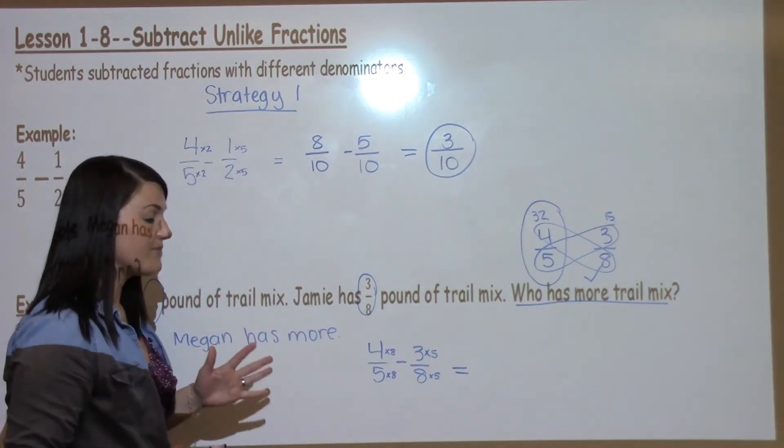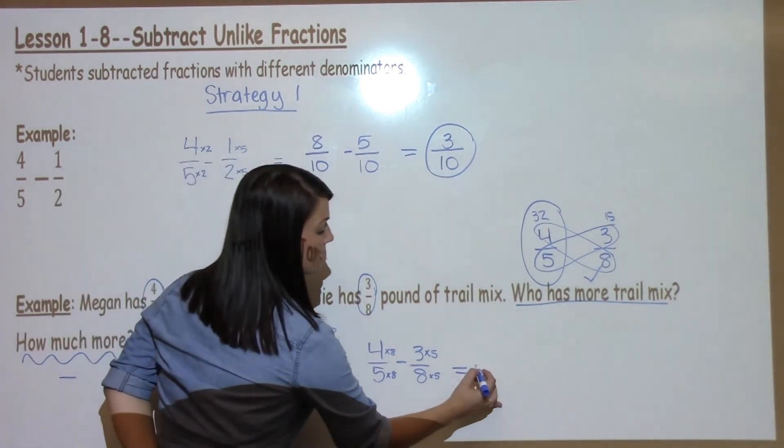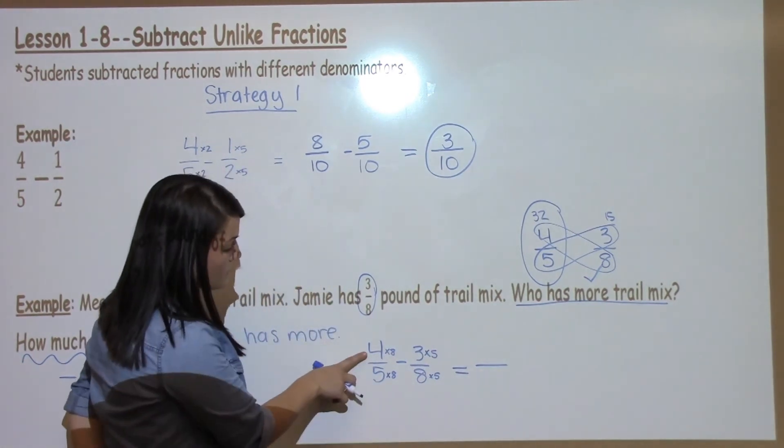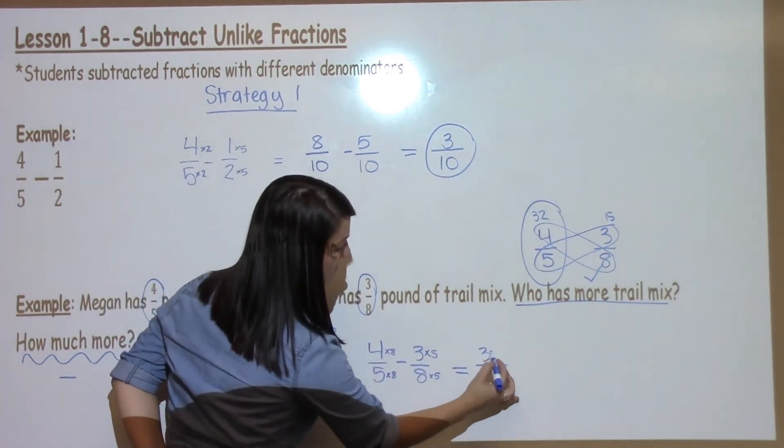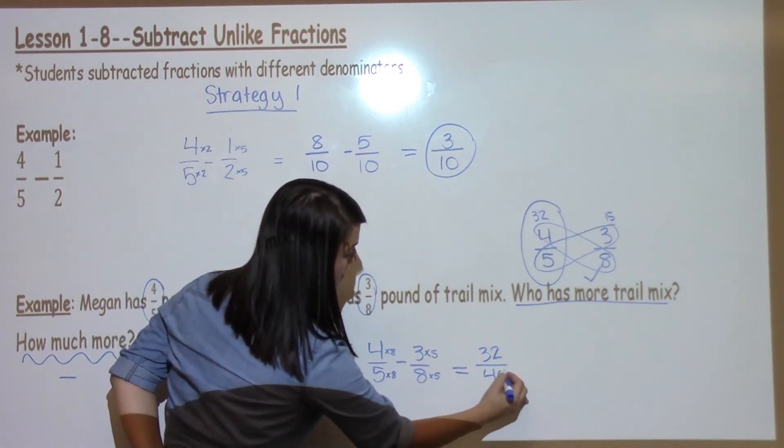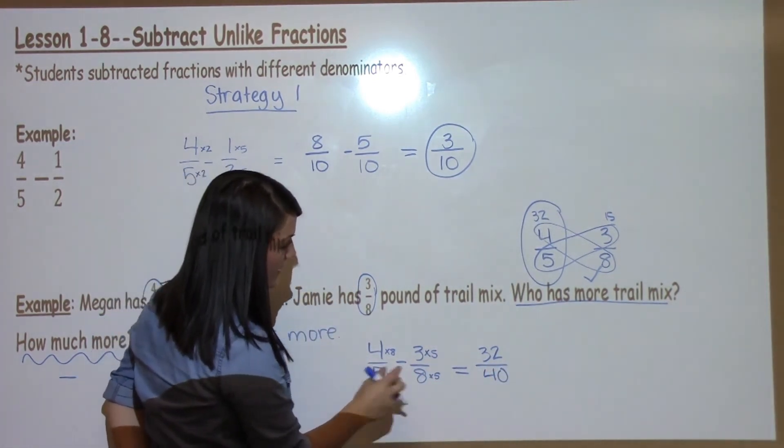This is going to make my fractions look a little bit different but we need the denominators to be the same so we must do it. 4 times 8 is 32, 5 times 8 is 40. That is equivalent to 4 fifths.